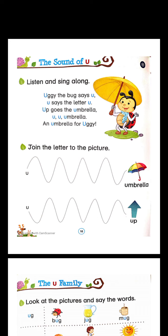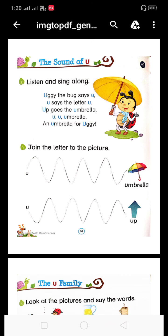Join the letter to the picture. U — kya hai yaha pe? Umbrella. U, M, B, R, E, double L, A — kya ho ga? Umbrella. Phir hai humara U — U, P — up.